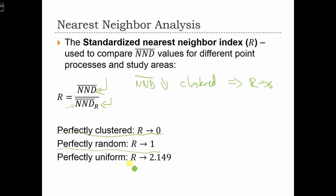The biggest difference we can have, at least expressed in this ratio term, is 2.149. So if nearest neighbor distance increases, that implies uniformity, and r goes to the maximum level of 2.149.